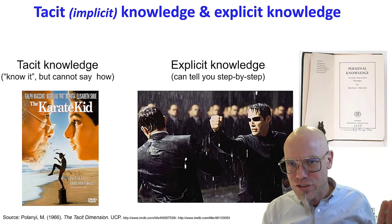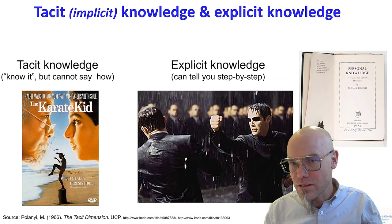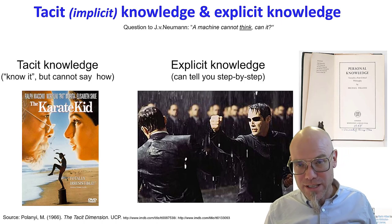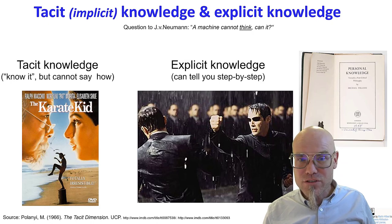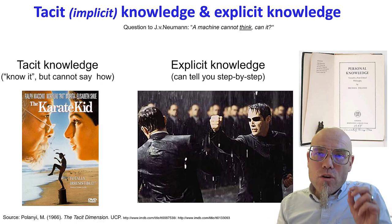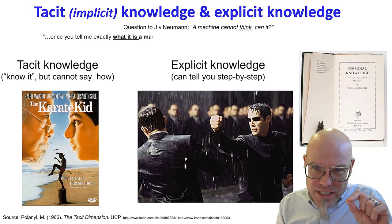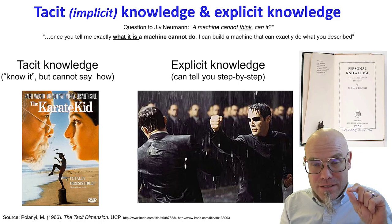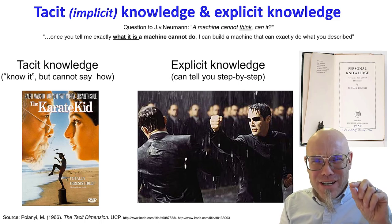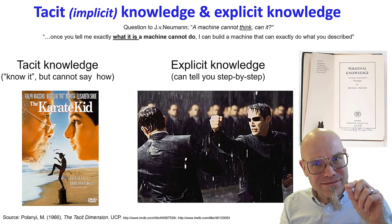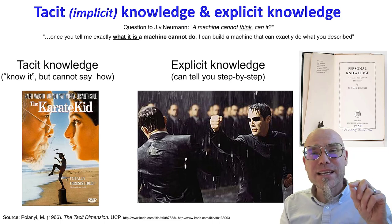And that distinction — especially how it relates to artificial intelligence — goes all the way back to the founding years of our field. Once at a conference, they asked Professor John von Neumann, one of the founders of modern computer science: 'Can a machine think?' Professor von Neumann responded: 'Once you tell me exactly what it is a machine cannot do, I can build a machine that can exactly do what you described, step-by-step.' So when you tell me what thinking is, I can build a machine that can do exactly that — because once you've described it, I can code it up. Then it became explicit.